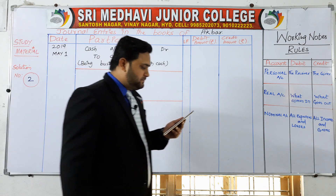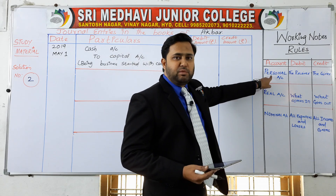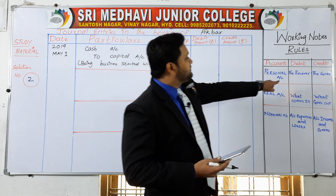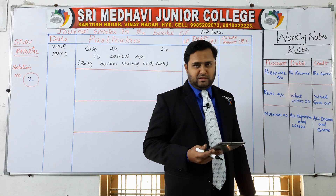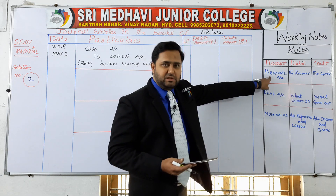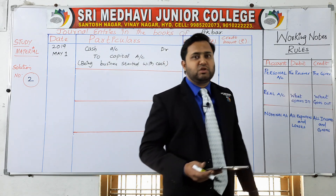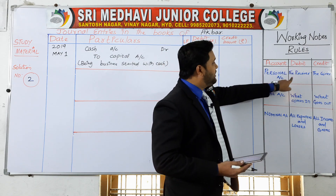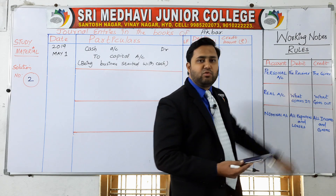On May 2nd, sold goods to Mahesh. Mahesh is a person and belongs to personal account. We are selling goods to Mahesh, so Mahesh is the receiver. Personal account rule: debit the receiver. Since Mahesh is receiving the goods, we debit Mahesh. Who is receiving? Mahesh is receiving.